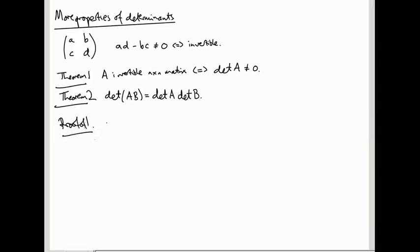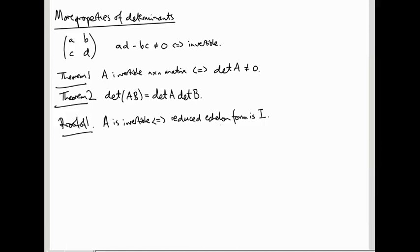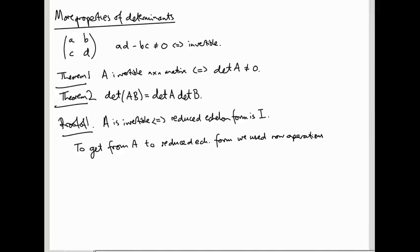We recall that a matrix A is invertible if and only if its reduced echelon form is the identity matrix. Now if the reduced echelon form is the identity matrix, then to get there from A, we used some row operations.